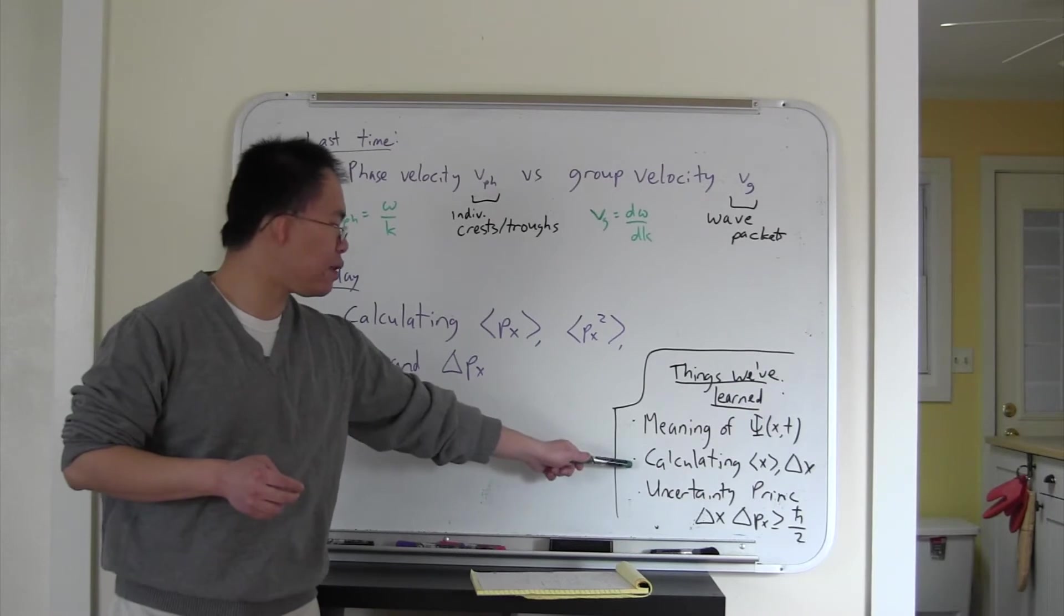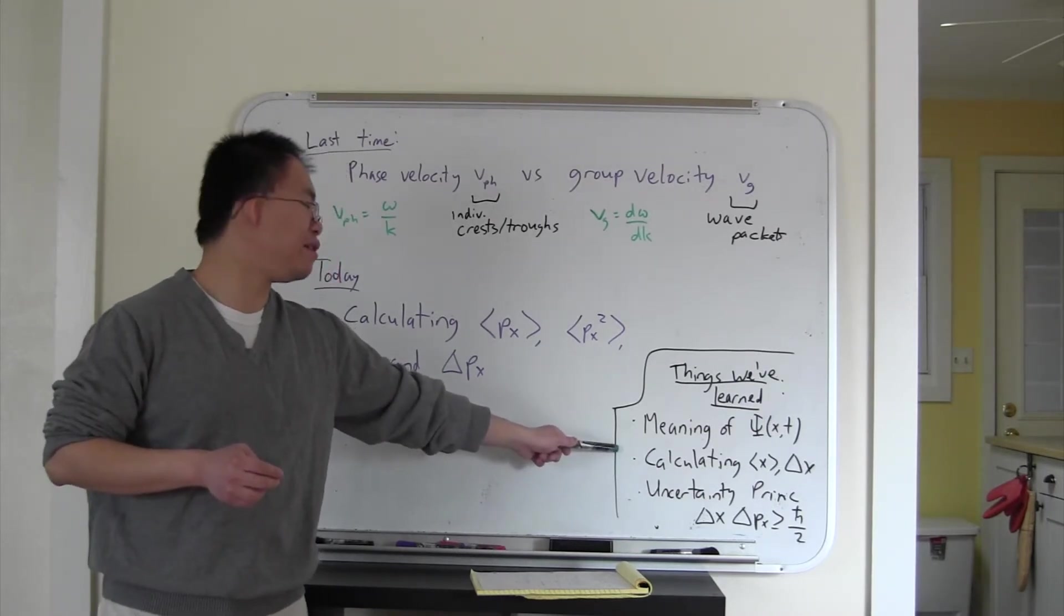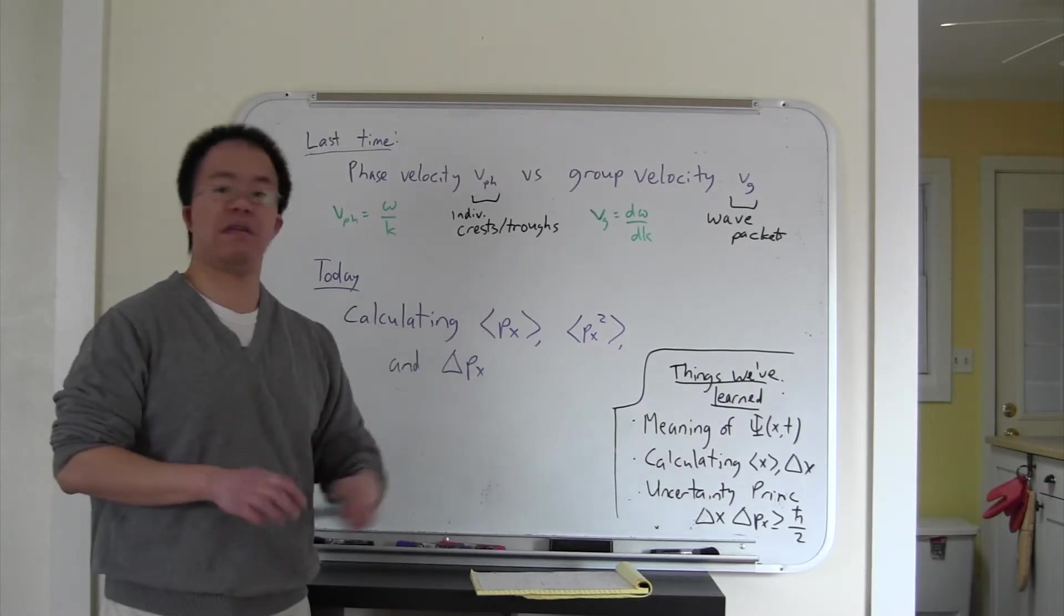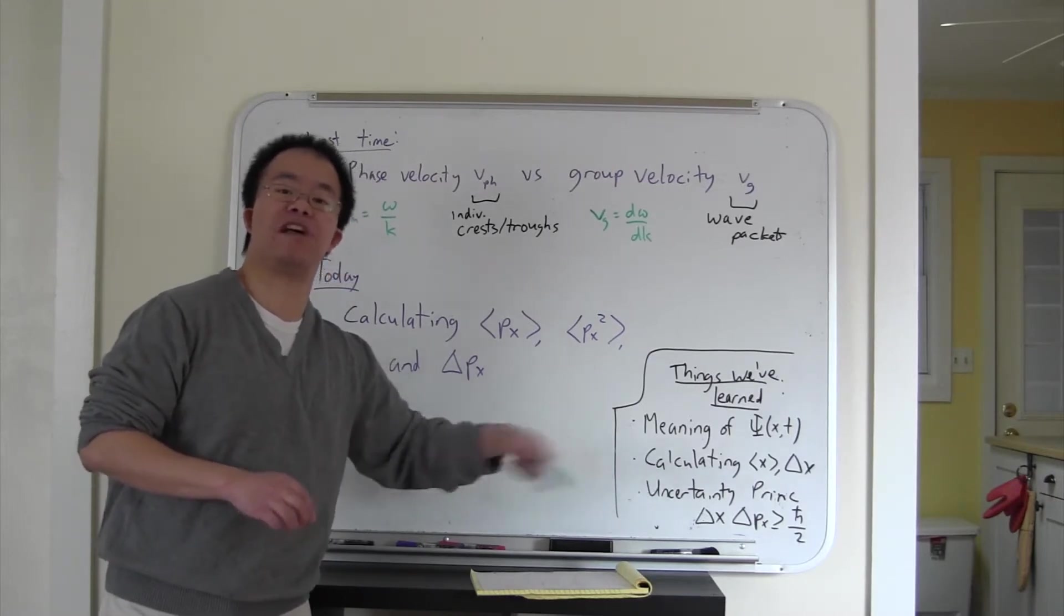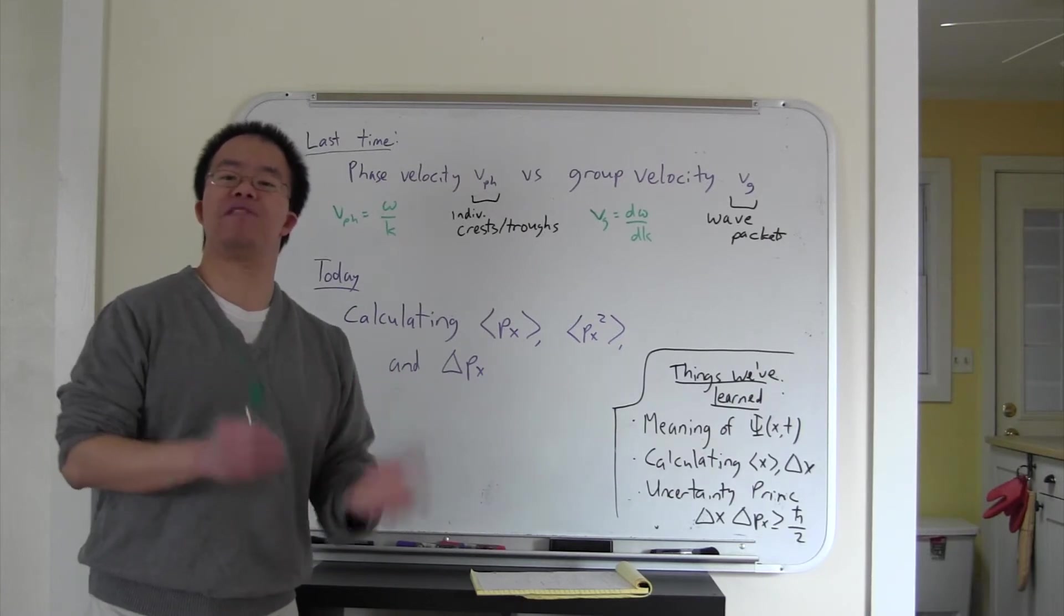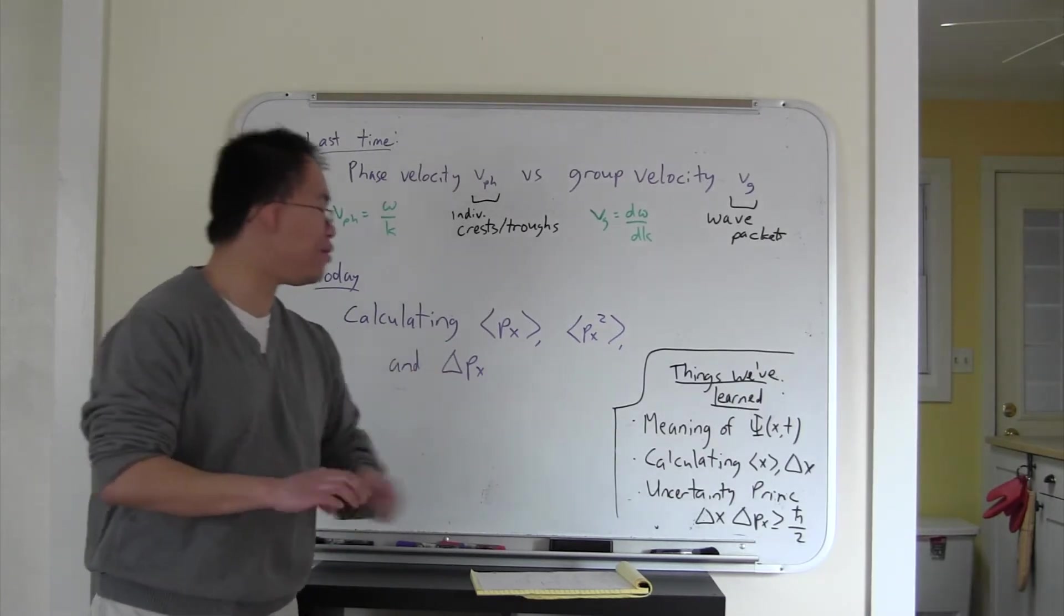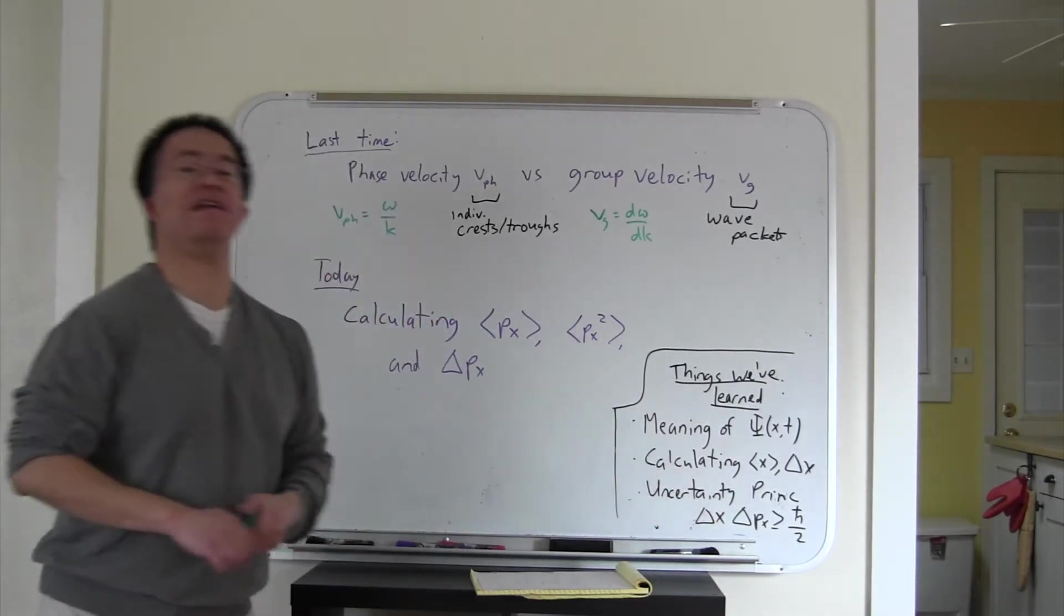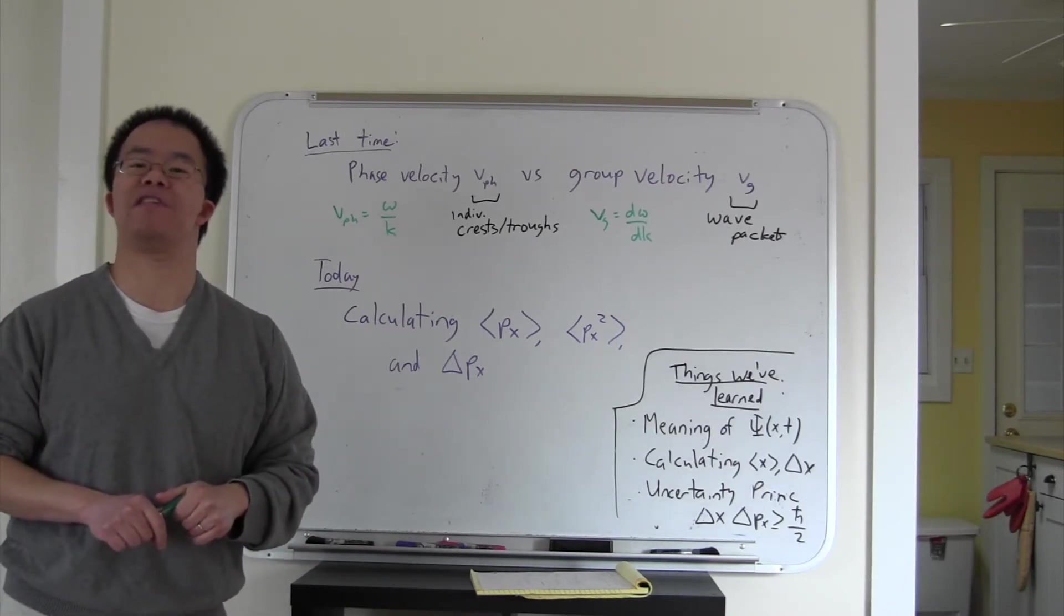We've learned how to calculate position expectation values and the uncertainty in position given a wave function. We've also learned about how the Heisenberg uncertainty principle says that there's a lower bound on the product of the position and the momentum uncertainty. But thus far, we have no idea of how to calculate this momentum uncertainty if we have a wave function. So answering that question is the goal for today.